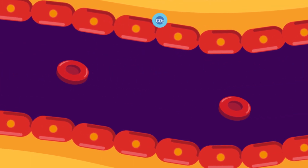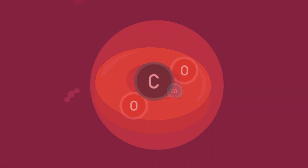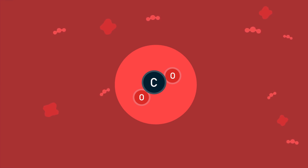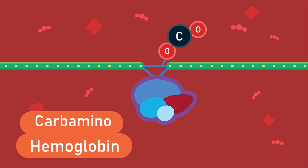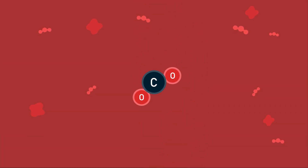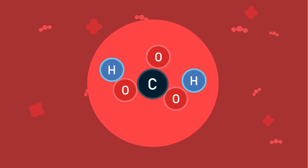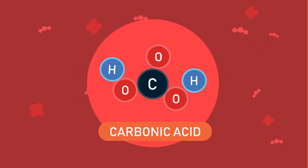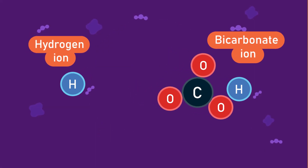Some of the carbon dioxide is dissolved in plasma, bound to hemoglobin, or in a converted form. If bound to hemoglobin, carbon dioxide is carried as carbaminohemoglobin. In converted form, carbon dioxide binds with water to form carbonic acid, and carbonic acid breaks down to release hydrogen ions and bicarbonate ions.